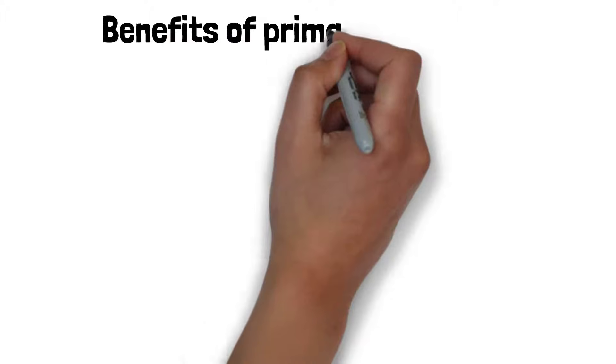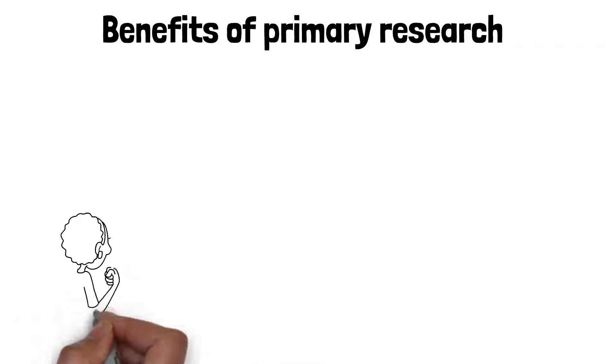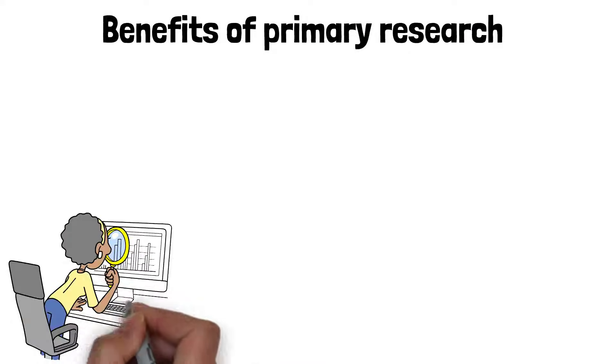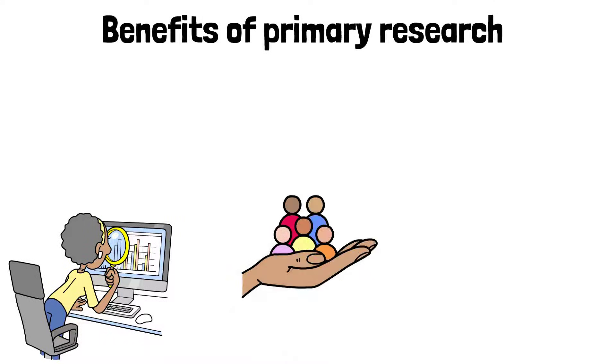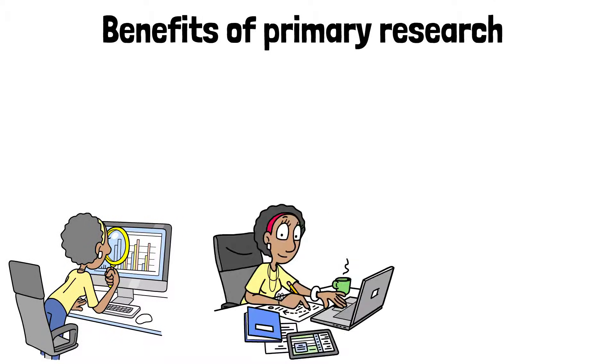One of the biggest benefits of primary research is that it provides specific, up-to-date data that is directly relevant to the researcher's needs. Since the data is collected first-hand, it can be tailored to the specific goals of the research.